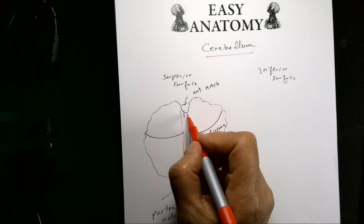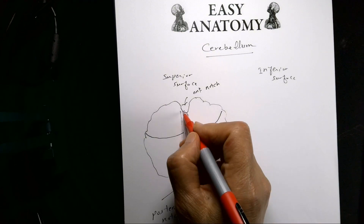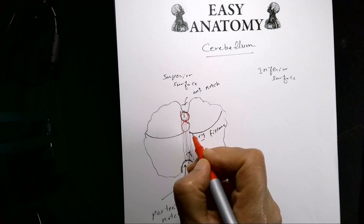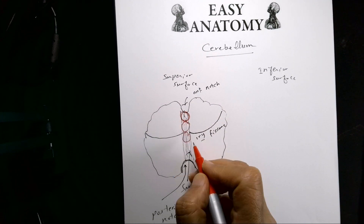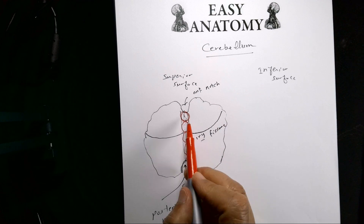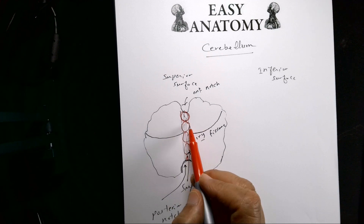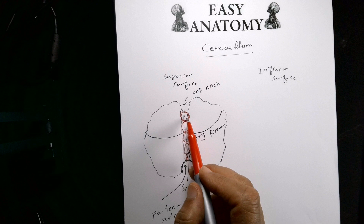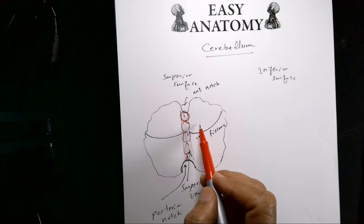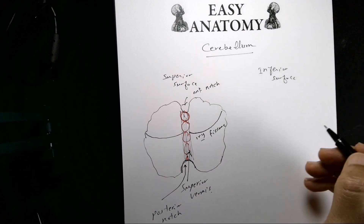The superior vermis is made of several parts — the central lobule, culmen, declive, and others — but you don't need to memorize all the names. When you look at the pure surface of the cerebellum, it appears relatively smooth, and it is hard to demarcate the central body from the right or left side.